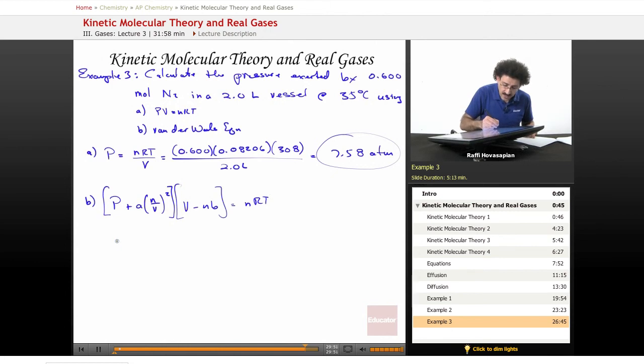And V minus nB equals nRT. And then when we rearrange, we get P equals nRT divided by V minus nB minus A times n over V squared.